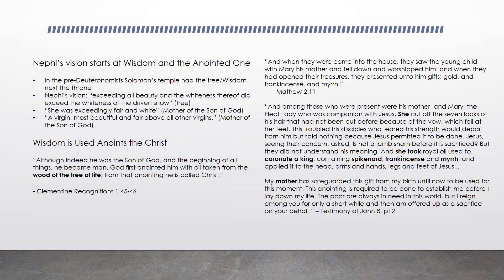She cut off seven locks of his hair — which had not been cut before because of a vow — and they fell at her feet. This troubled his disciples who feared his strength would depart from him. But Jesus said: 'Is not a lamb shorn before it is sacrificed?' She then took royal oil used to coronate a king, containing spikenard, frankincense, and myrrh, and applied it to the head, arms, legs, and feet of Jesus. Christ says: 'My mother has safeguarded this gift from my birth until now to be used for this moment. This anointing is required to establish me before I lay down my life.'